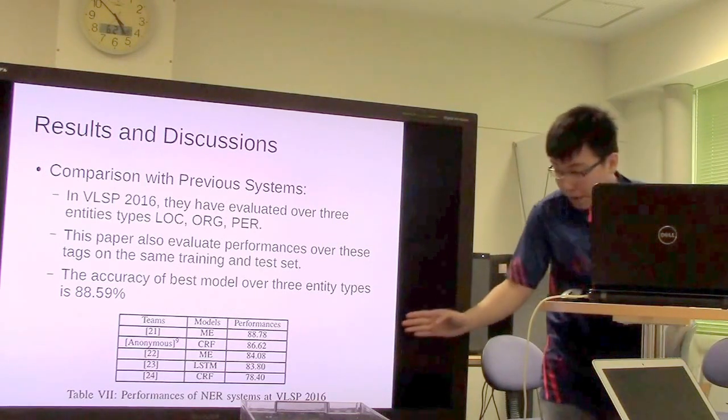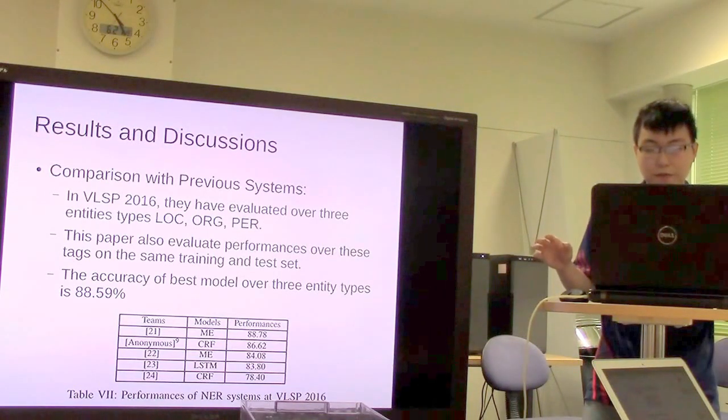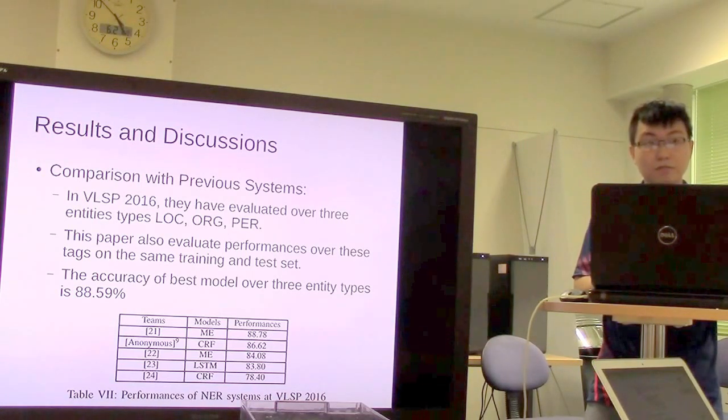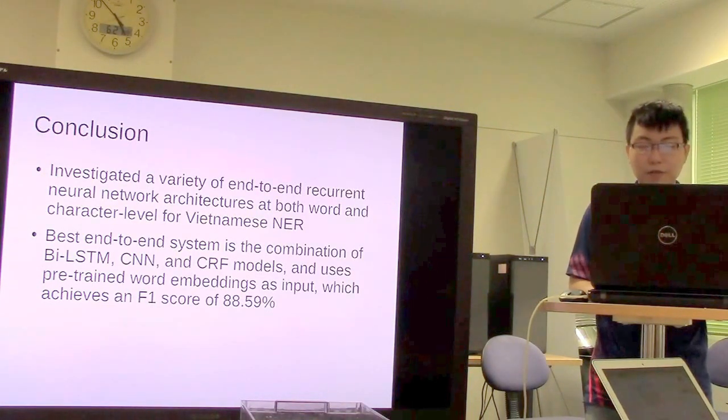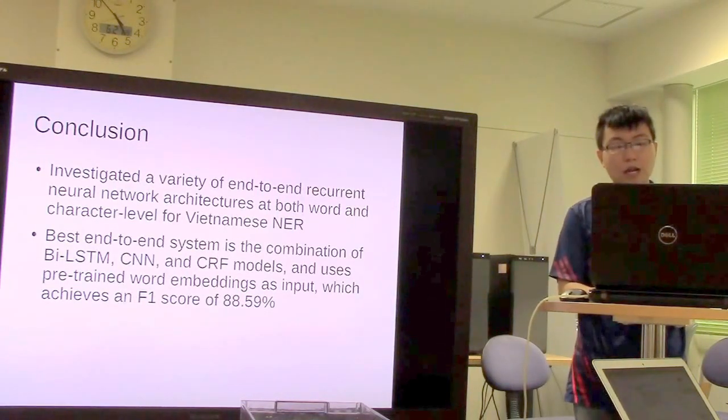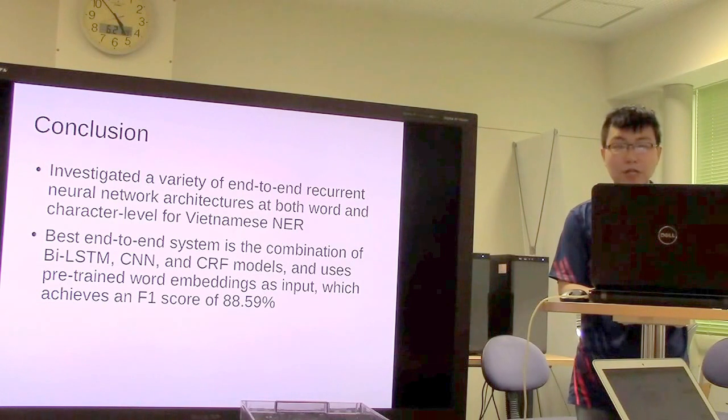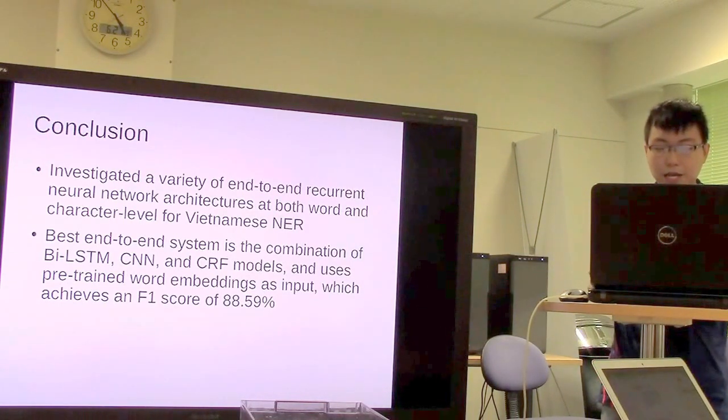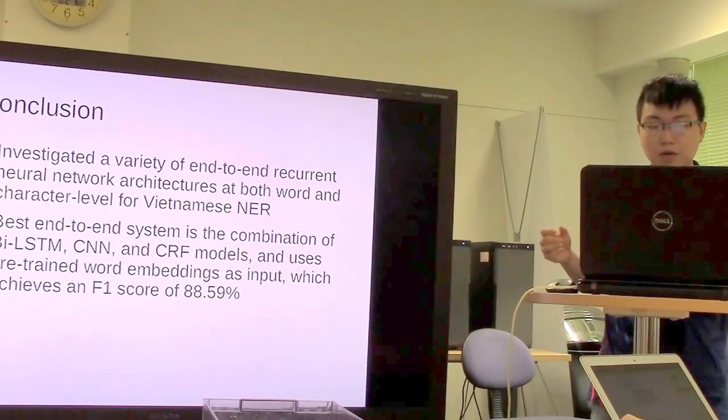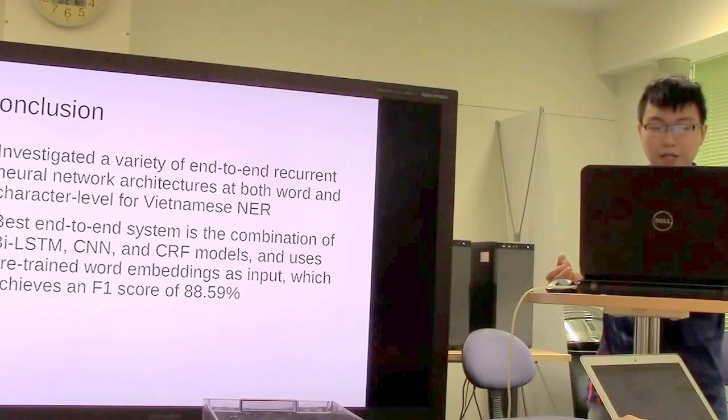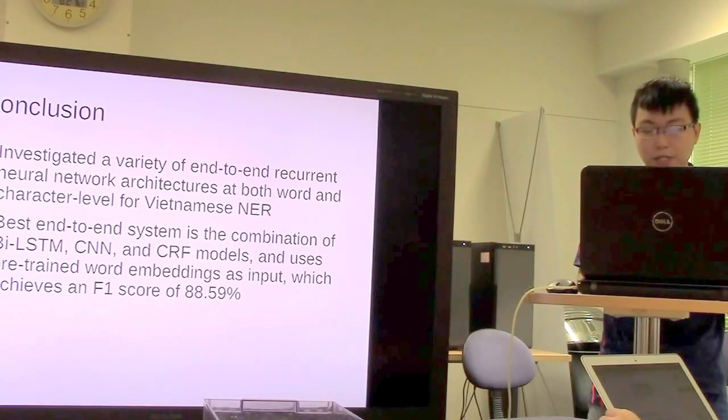Conclusion: This paper investigates a variety of end-to-end recurrent neural network architectures at both word and character level for Vietnamese named entity recognition. The best end-to-end system is the combination of Bidirectional Long Short-Term Memory, Convolutional Neural Network, and Conditional Random Field model, using pre-trained word embeddings as input, which achieves an F1 score of 88.59%. Thank you for listening.